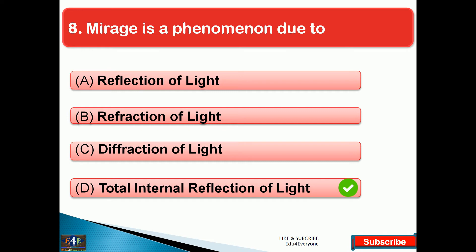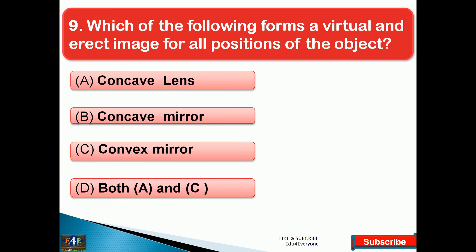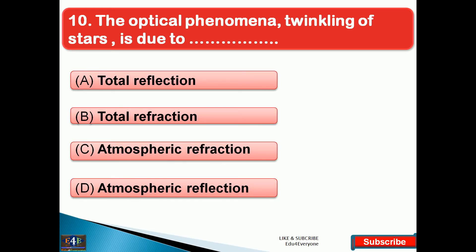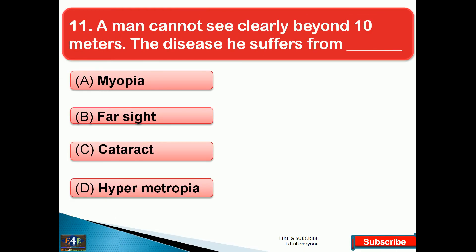Which of the following forms a virtual and erect image for all positions of the object? The right answer is option D, that is both concave lens and convex mirror. The optical phenomenon of twinkling of stars is due to — the right answer is option C, that is atmospheric refraction. Next question: a man cannot see clearly beyond 10 meters — the disease he suffers from is option A, that is myopia, or short-sightedness.